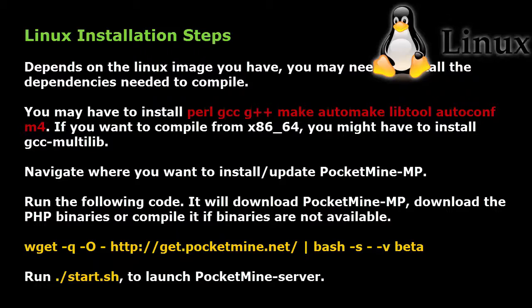M4. If you want to compile from x86_64, you might have to install GCC Multilib. Navigate to where you want to install Pocket Mine Server and run the following code. It will download Pocket Mine Server and download the PHP binaries, or compile binaries if pre-built are not available. Run: wget -qO- get.pocketmine.net -sv beta. Then run slash start.sh to launch Pocket Mine Server.